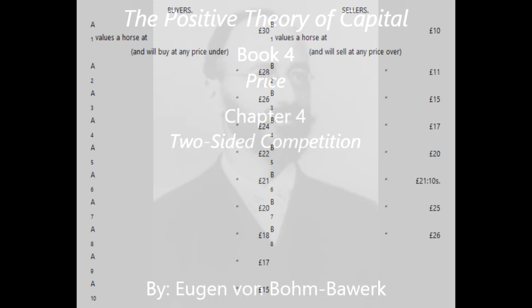Those being the only limits within which there occurs the relation favorable to the final settlement: that all who are able to take a share in the business find it their advantage to do so, while all who do not find their advantage — the unsuccessful competitors — have no power to prevent the others from coming to terms. Let us try now to apply the results of this lengthy analysis to our theory of price. We notice first that what decides success in two-sided competition is, as in the case of one-sided competition, the degree of capability for exchange.